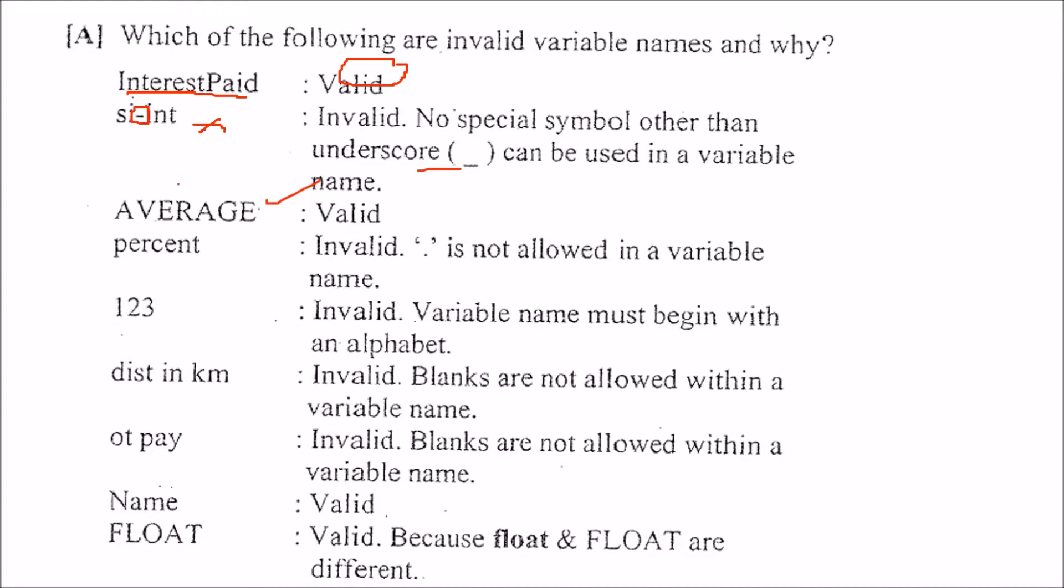You can give the name in caps, means upper case or lower case. Now here, if you assume that there is a decimal point here or a dot here, this is invalid because of the dot point. 1, 2, 3 it is invalid because the name should start with either an alphabet or an underscore. These two are only allowed, number beginning, the variable name beginning with a number is not allowed.